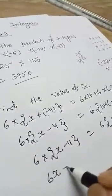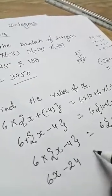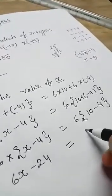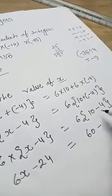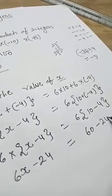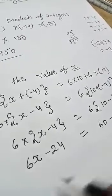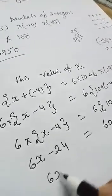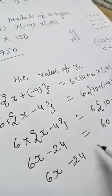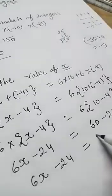So 6x minus 24 is equal to 6 tens is 60 minus 24. So your equation completed, not one step more: 6x minus 24 is equal to 36.